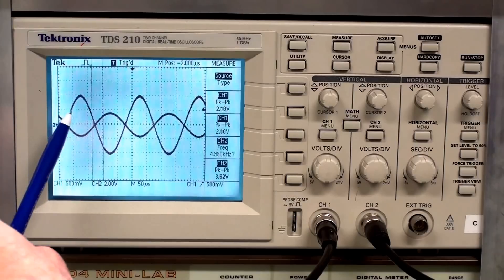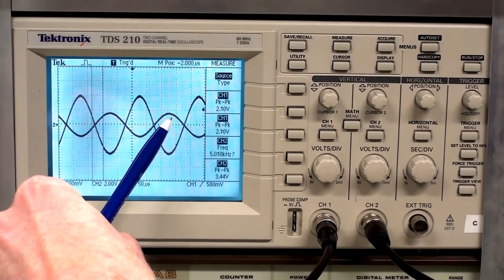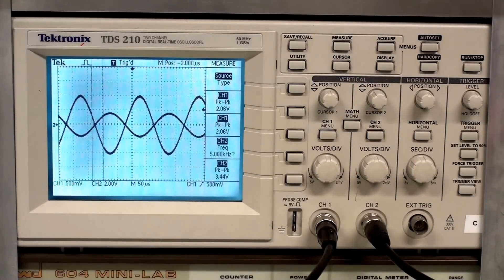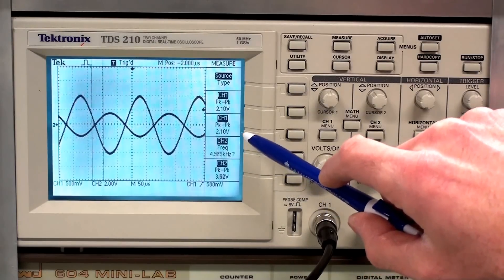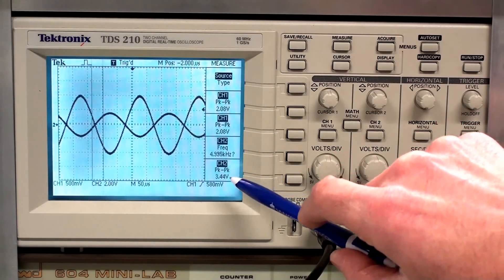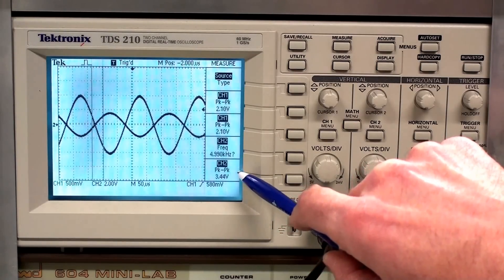The other trace on channel 2 is this one here. This trace represents the output of the amplifier. And it's on channel 1, sorry, it's on channel 2. And we can see that it measures about 3.44 volts peak to peak.